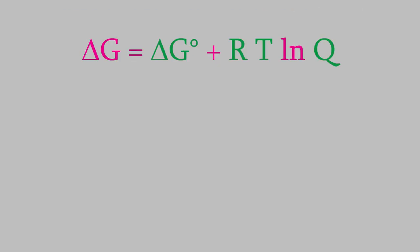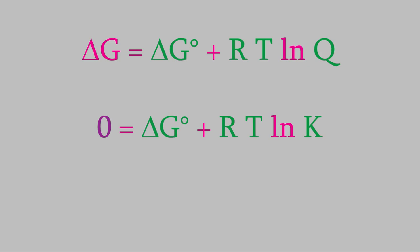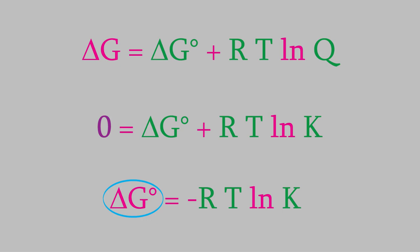But there's another useful thing we can do with this equation. It turns out that if we know the standard Gibbs free energy for a reaction, we can figure out its equilibrium constant, or vice versa. At equilibrium, the Gibbs free energy equals zero, so we can set the left side of the equation to zero. Also, at equilibrium, the reaction quotient Q equals K, the equilibrium constant. If we rearrange, we get: negative delta G° = RT ln K. So if we know delta G°, we can figure out the equilibrium constant, or vice versa.